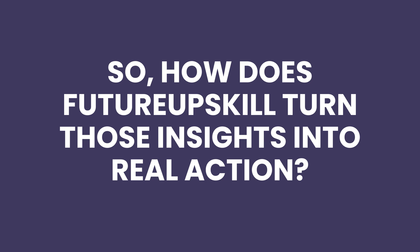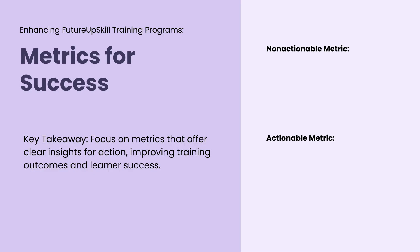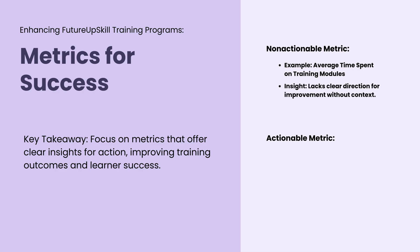What is the secret formula to turn non-actionable insight into actionable insight? Let us look at the non-actionable metric first. Future Upskills might report the average time spent on training modules in their impact report. At first glance, you might think knowing how long people spend on the modules could be useful. But this number doesn't tell you much without context — are learners spending time because the content is engaging or because it's confusing? Without more details, it's hard to say what you should do differently.